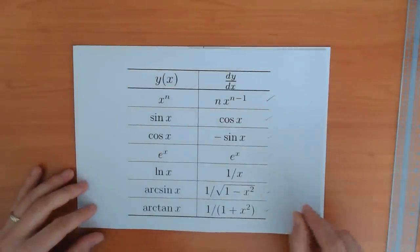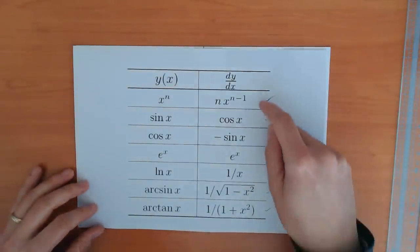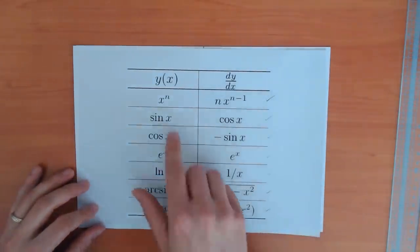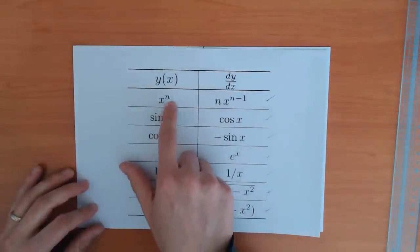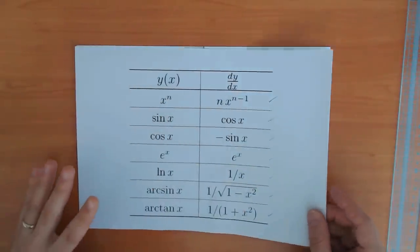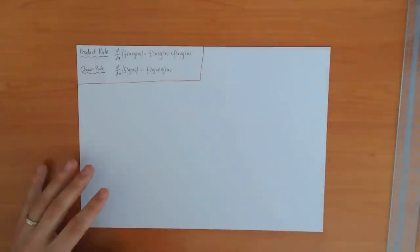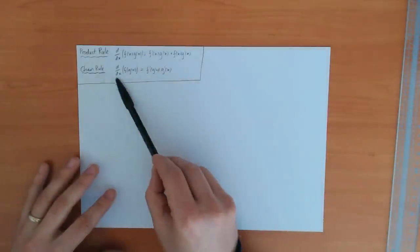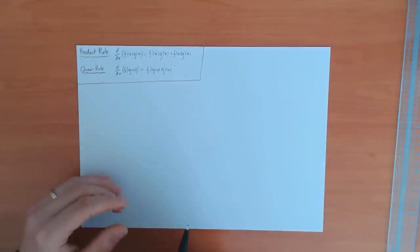The things you need to know first of all are these seven basic results — how to differentiate the basic functions like x to the n, sin x, cos x and so on. You also need to know the product rule and the chain rule, which tell you how to differentiate various combinations of these basic functions.